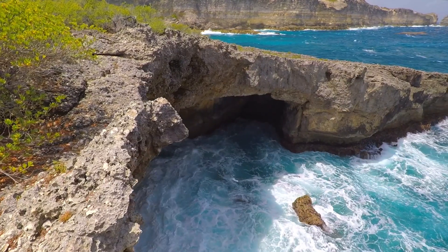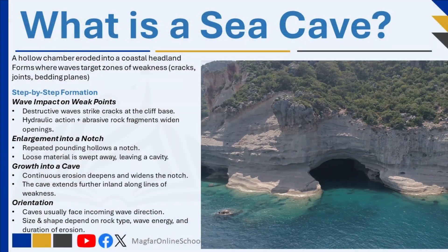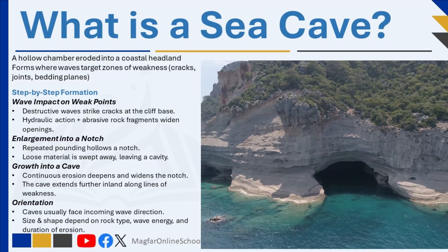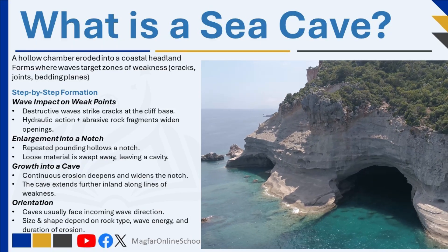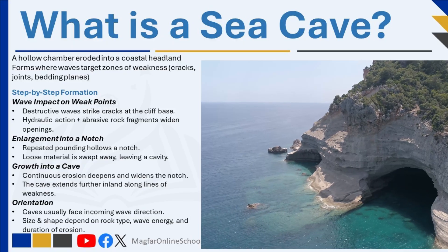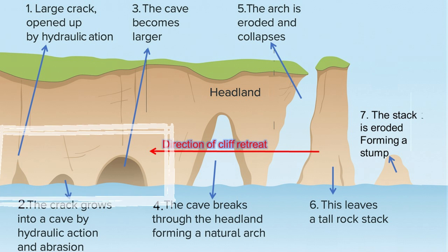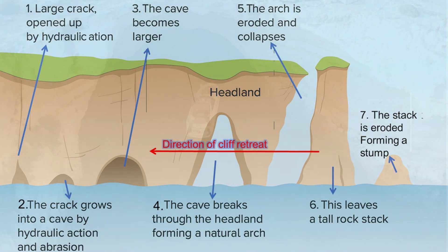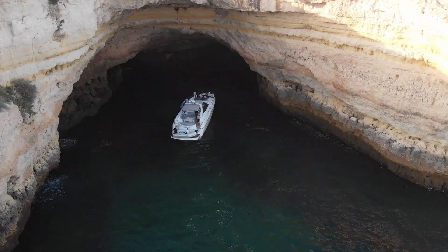Over time, waves concentrate their energy on zones of weakness in coastal headlands, such as cracks, joints, or bedding planes in the rock. As waves continuously strike the base of the headland, the force of the water, along with rock fragments carried by the waves, begins to enlarge these openings. This ongoing erosion slowly hollows out the rock, forming a sea cave. The process may take many years, but with persistent wave action, the cave becomes deeper and wider, extending into the body of the headland. These sea caves are often found at the base of steep cliffs and tend to face the direction from which the waves approach. The size and shape of the cave depend on the rock type, the direction of wave attack, and how long the erosion has been taking place.